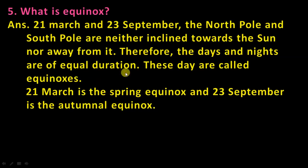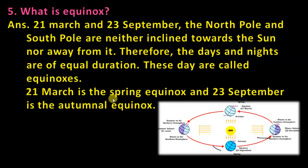21st March is the spring equinox and 23rd September is the autumnal equinox. Looking at the diagram, the sun's rays fall on the equator, which means day and night will be equal. A helpful mnemonic: E for equator, E for equinox, E for equal.